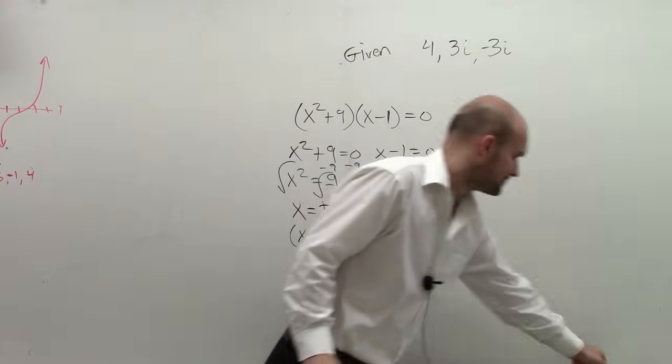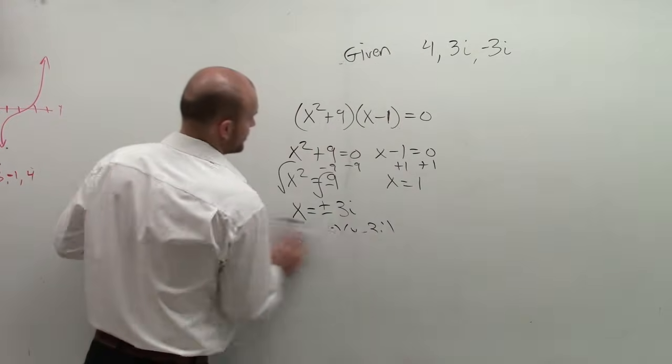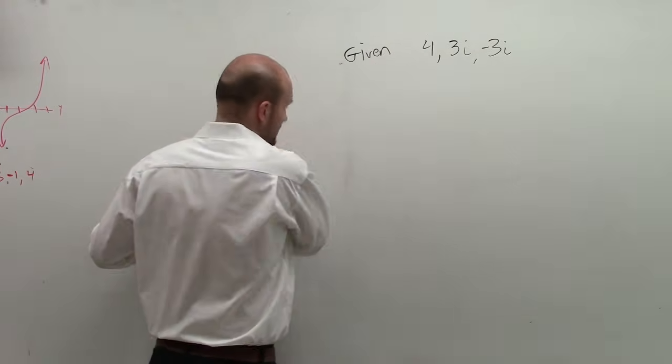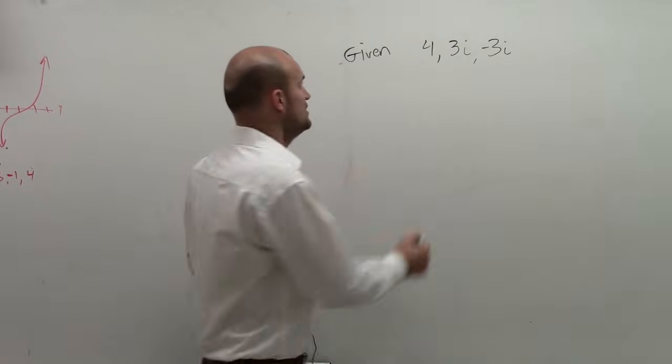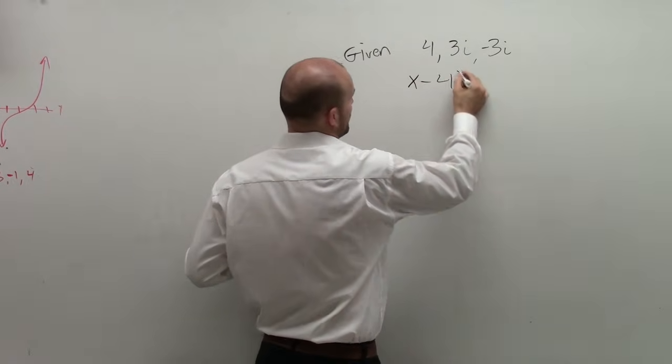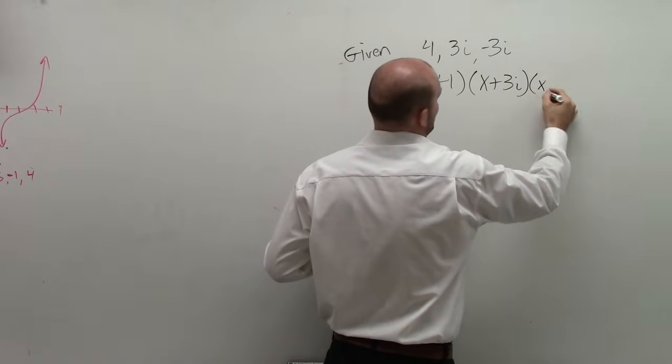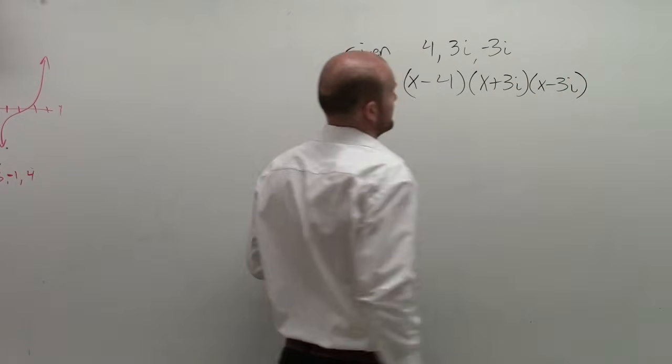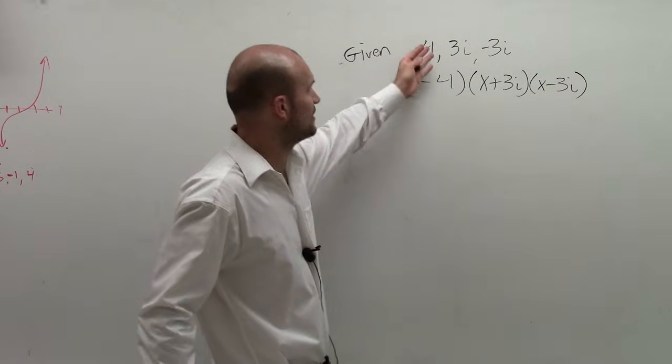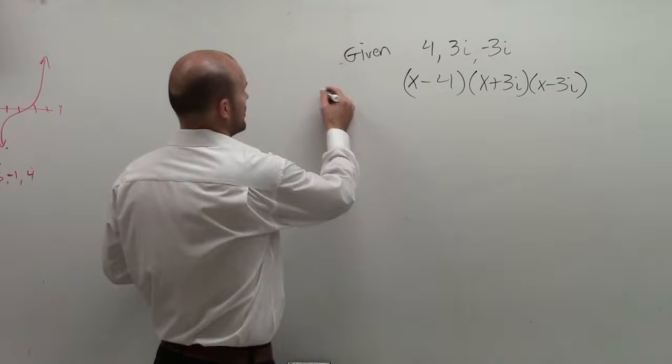All right? So what we're going to do is we're going to take our zeroes, and we're going to write it as a series of factors. So to do that, I say x minus 4 times x plus 3i times x minus 3i. All right? And if you want to do that, if you want to go from, how do I get x minus 4?